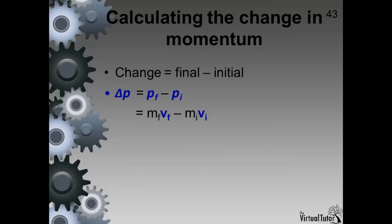We calculate the final and initial momentum using the formula we learned. Momentum equals mass times velocity. The subscript f refers to the final condition and the subscript i refers to the initial condition.